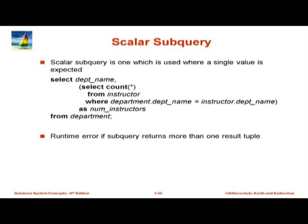The final category is scalar subqueries, which are used where a single value is expected. So far all our subqueries could return multiple values, used with IN, EXISTS, or in the FROM clause. Here is an interesting case: find the total number of instructors in each department. The query is: SELECT dept_name, (SELECT COUNT(*) FROM instructor WHERE department.dept_name = instructor.dept_name) AS num_instructor FROM department. The subquery returns a scalar — a single value — because COUNT(*) is an aggregate.